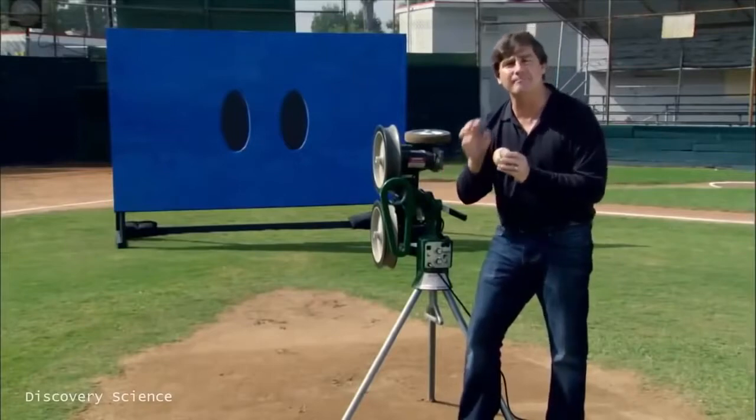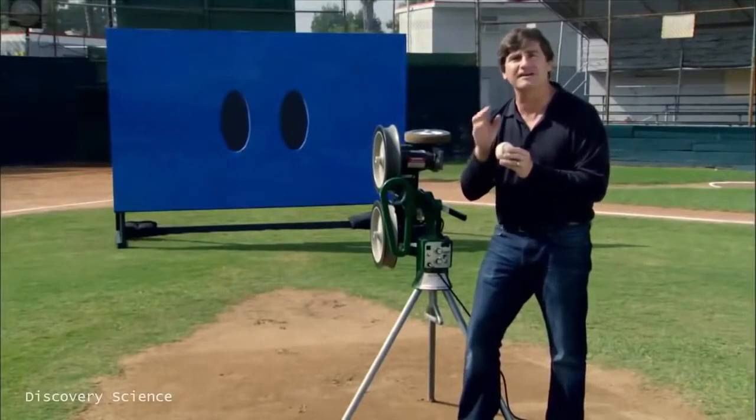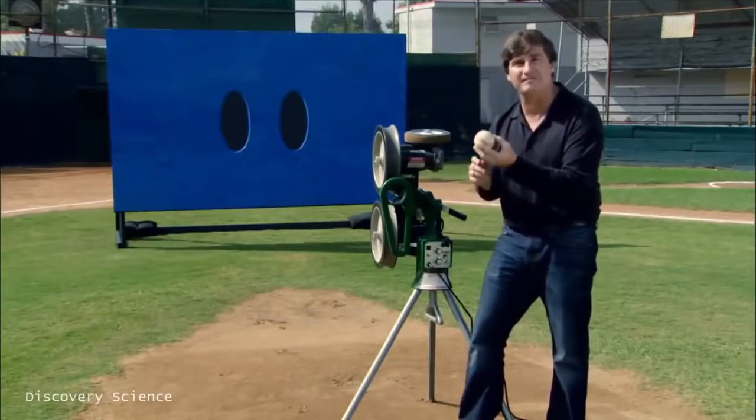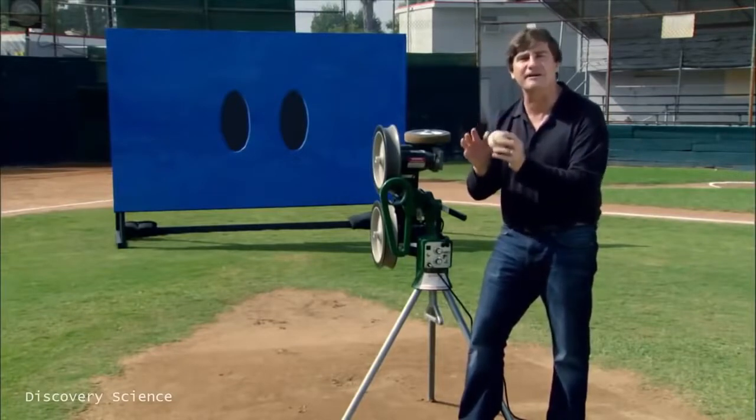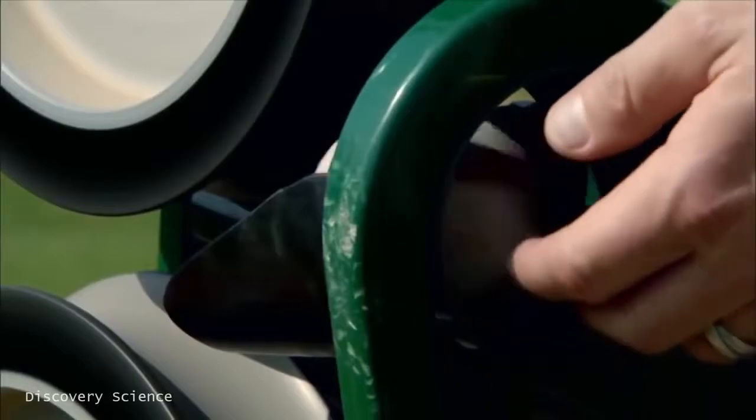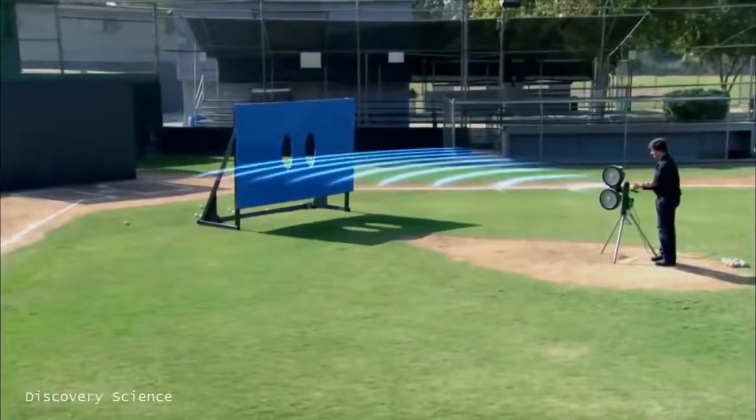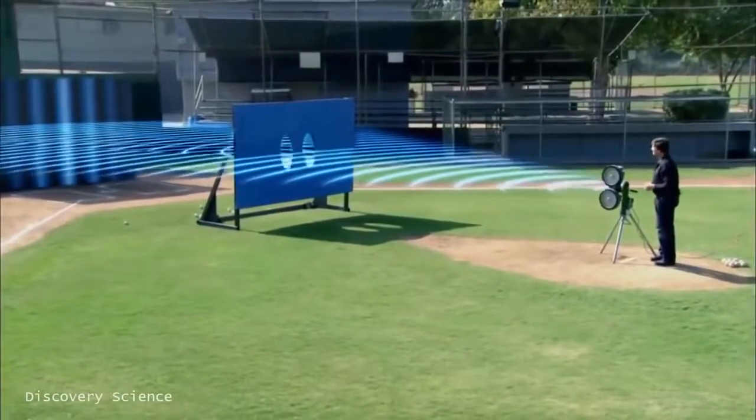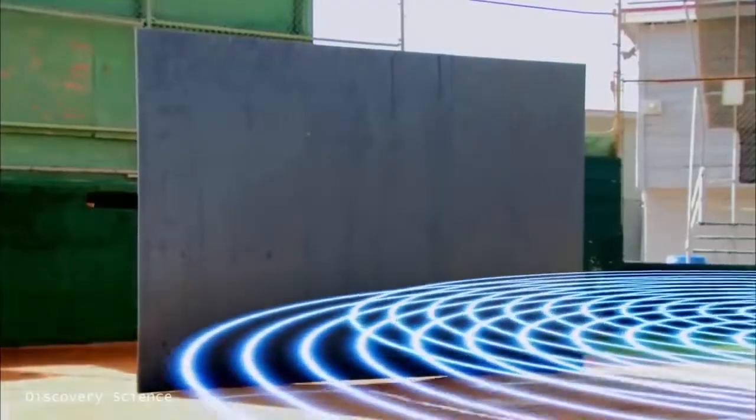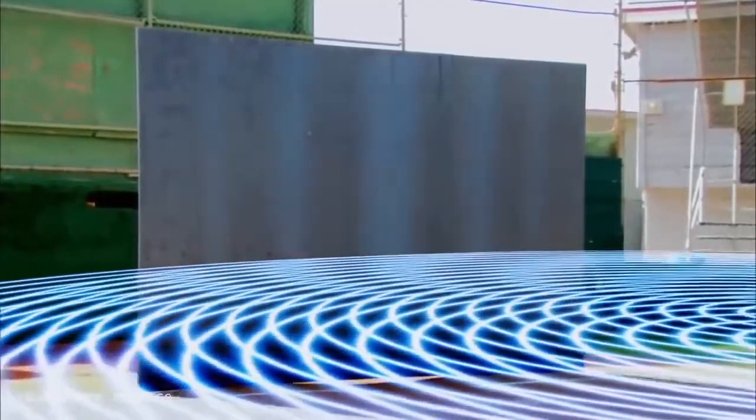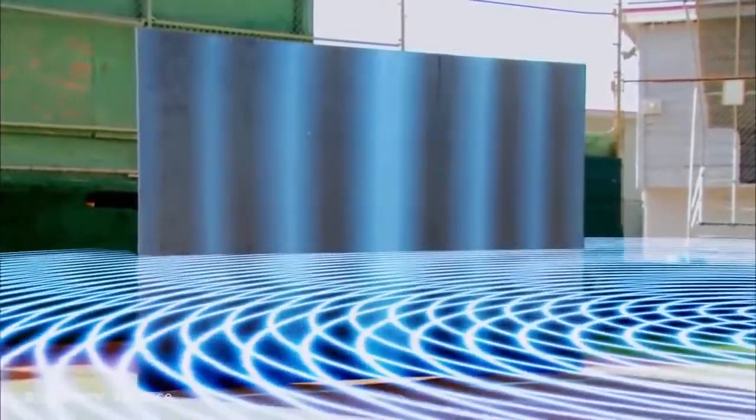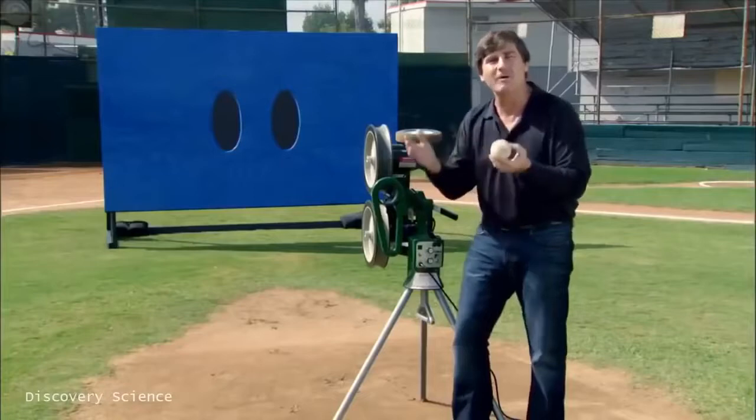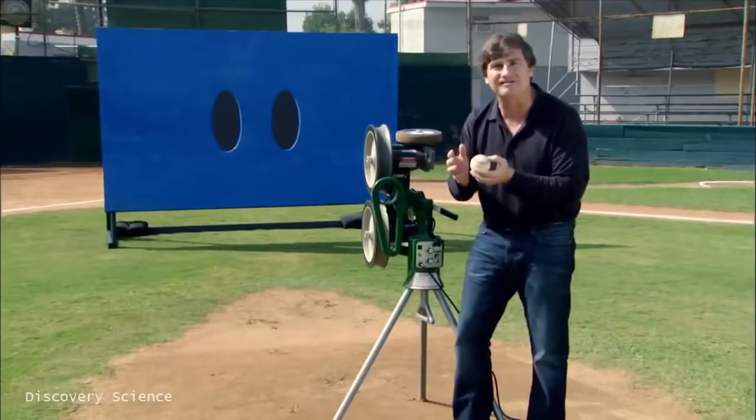But when we descend into the microscopic universe and use electrons, which are 10 trillion times smaller than baseballs, we get a very different, odd result when we perform this experiment. A pattern that you would expect if these were waves going through both holes at the same time and interfering with themselves. Well, we usually think of electrons as being particles. So how can they exhibit wave-like properties?